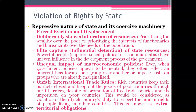The second factor is deliberately skewed allocation of resources. The resources of a country are supposed to be for the betterment of each and every individual. If they are deliberately skewed — meaning preferably utilized for a particular group or individual — that is skewness. In this, prioritizing the wealthy over the poor, government officials or leaders prefer the wealthy community over the poor, and they prioritize the interest of functionaries and bureaucrats over the needs of the population. This is deliberately skewing the allocation of resources.